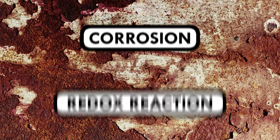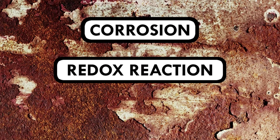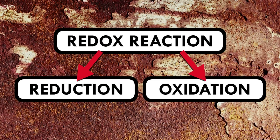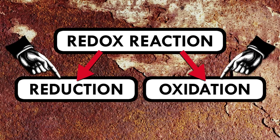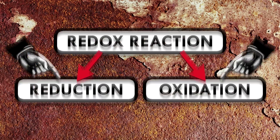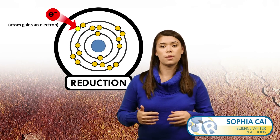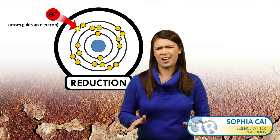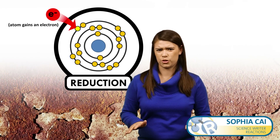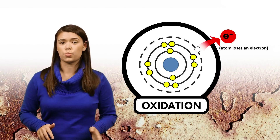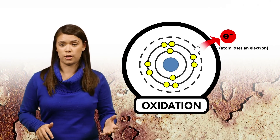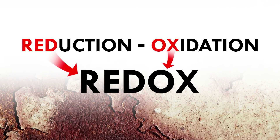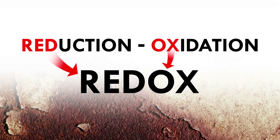Corrosion is caused by a redox reaction, which is actually two simultaneous reactions in one: reduction and oxidation. A reduction reaction occurs when some atoms or molecules gain electrons. I know, it's confusing. Oxidation is where other atoms or molecules lose electrons. Reduction, oxidation — get it?